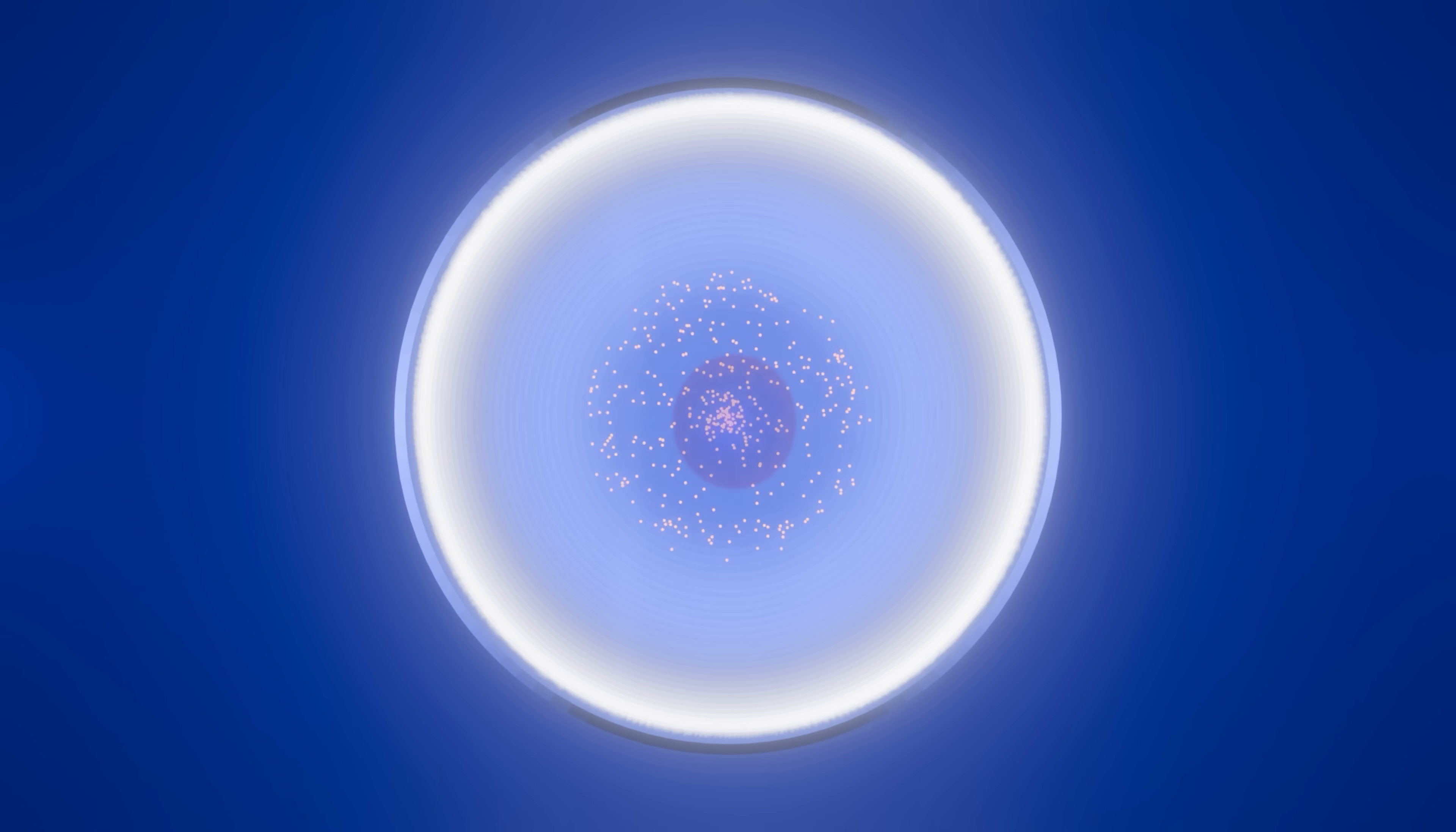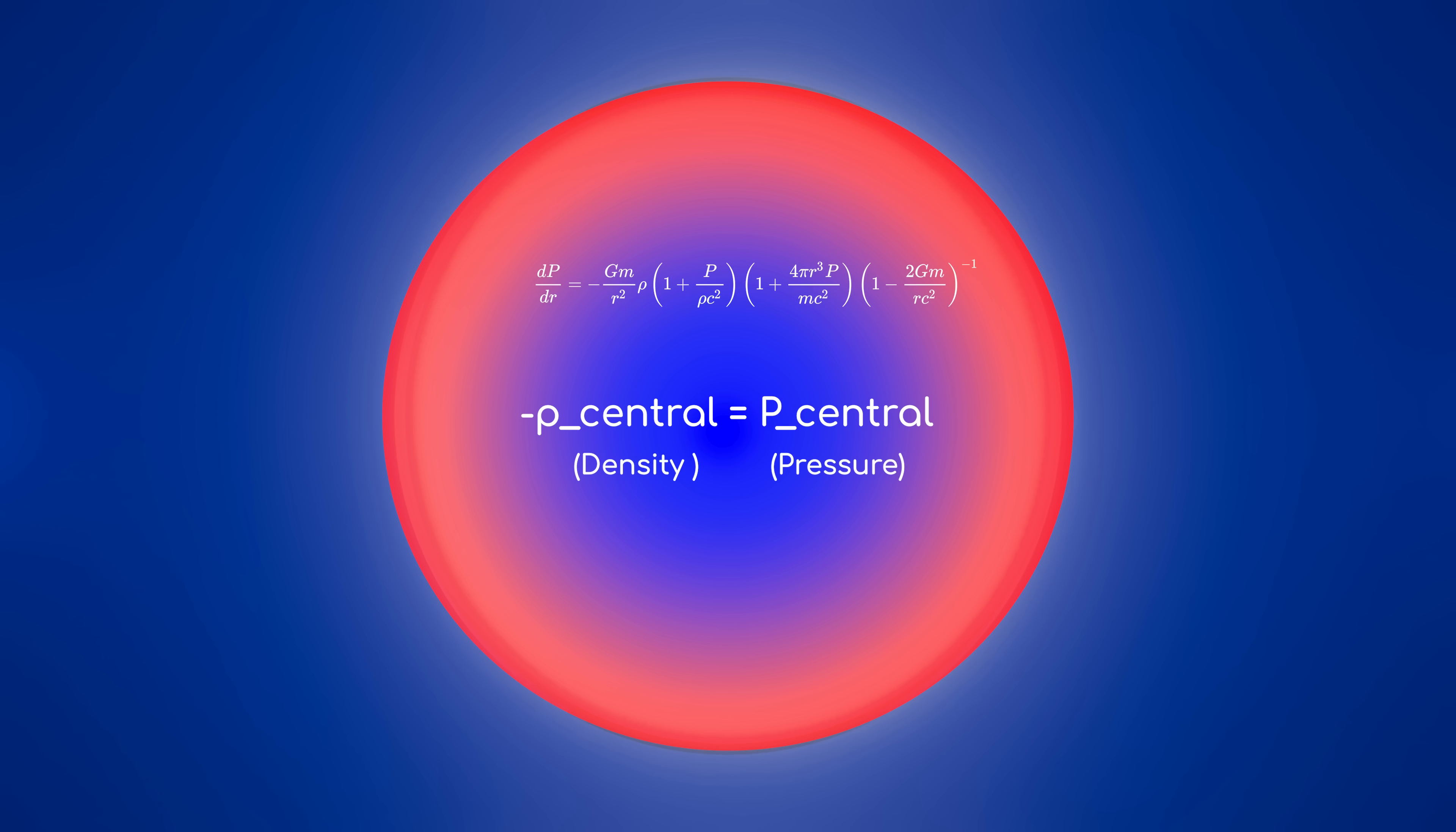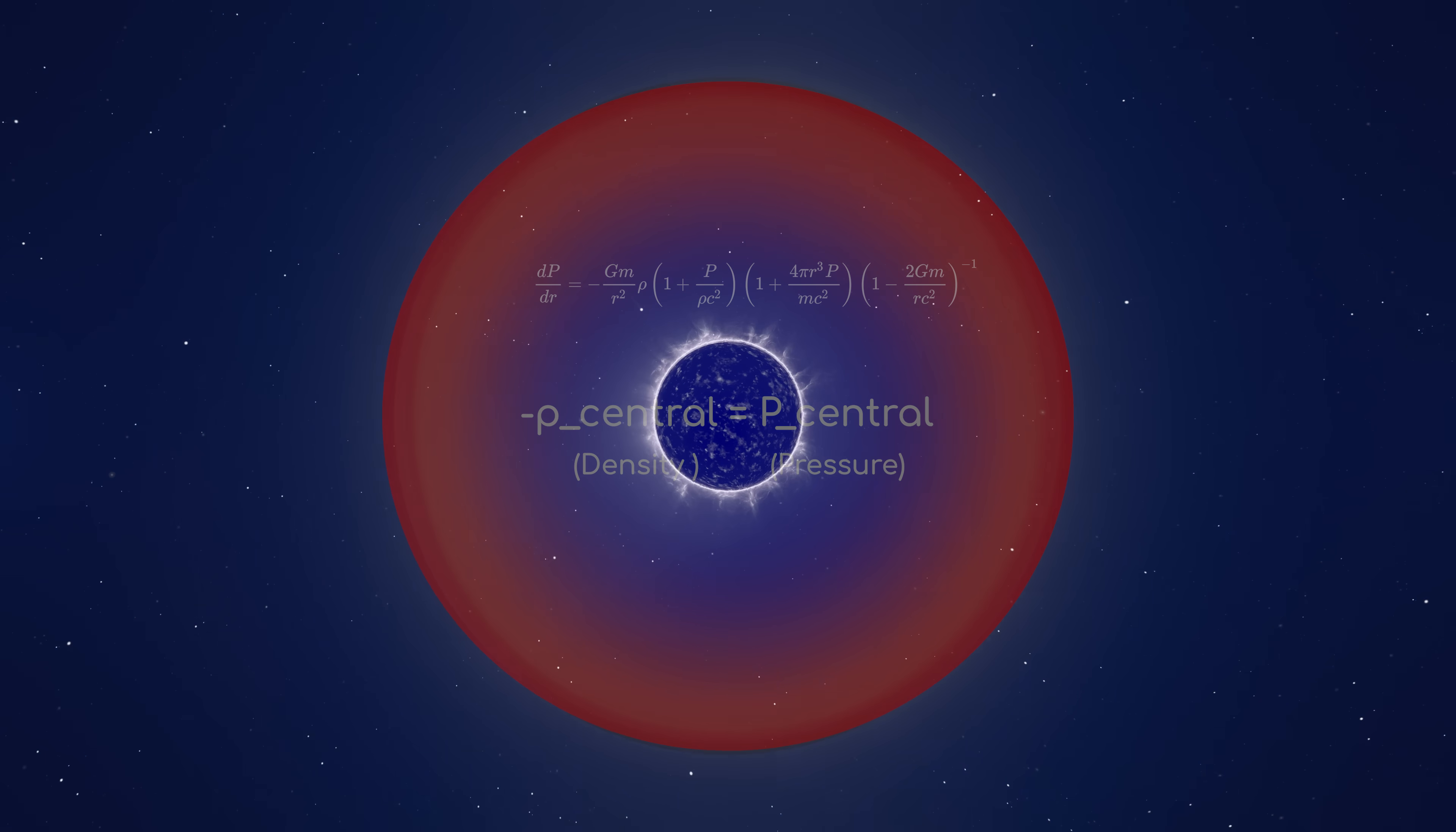First, the pressure has to blow up to negative infinity somewhere in the star. Then it has to flip sign to positive infinity and decrease outwards from there until it reaches zero pressure, marking the star's outer surface. The exact location of the infinite pressure depends on what the pressure is at the centre, so if you tune that central pressure just right, you can keep the pressure finite right up until the edge of the star. That happens when the pressure at the centre is exactly equal and opposite to the star's energy density there. In this special case, the TOV equations say that the pressure and energy density remain constant, equal and opposite throughout the entire volume of the star, right up until its surface.